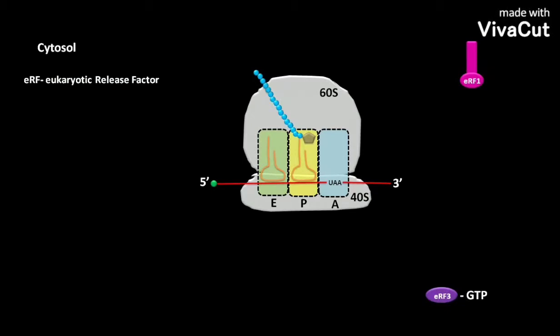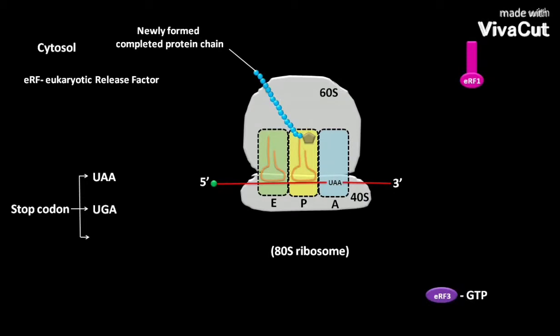When an 80S ribosome having a newly formed completed protein chain reaches a stop codon like UAA or UGA or UAG, the eRF1 along with eRF3-GTP enters the ribosomal complex, probably at or near the A site, and the eRF1 recognizes the stop codon directly.